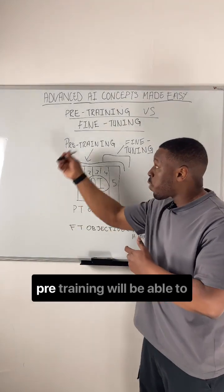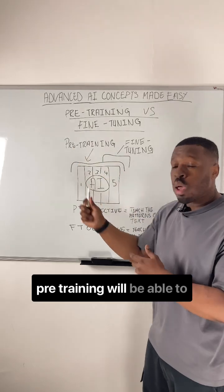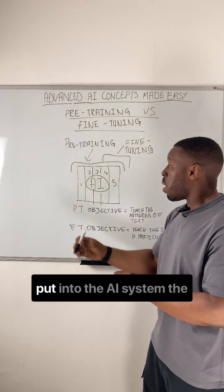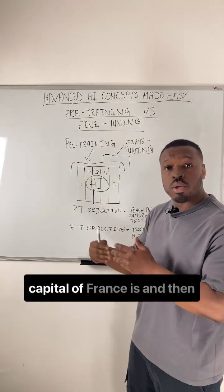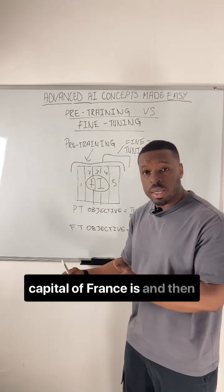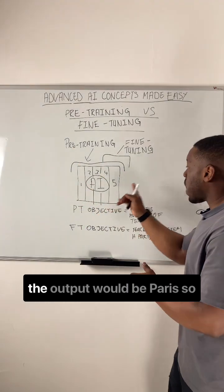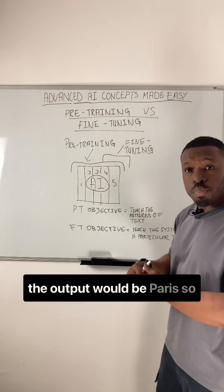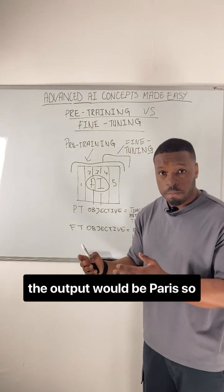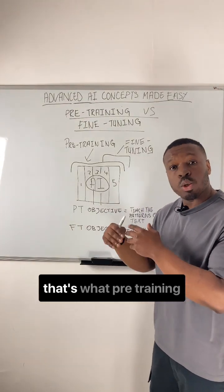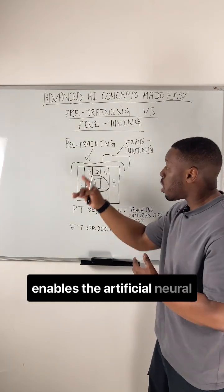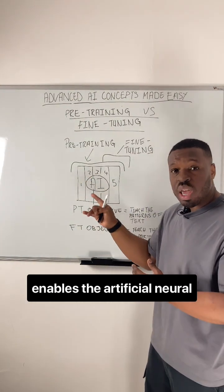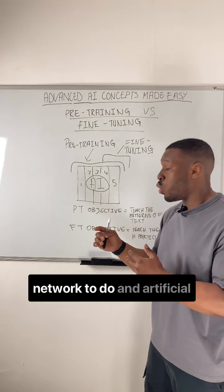For example, after pre-training, we'll be able to put into the AI system 'the capital of France is' and then the output would be 'Paris.' So that's what pre-training enables the artificial neural network to do.